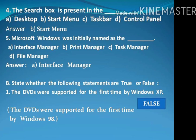Question number 5: Microsoft Windows was initially named as the — . The options are: A. Interface Manager, B. Print Manager, C. Task Manager, D. File Manager. The correct answer is A, Interface Manager.